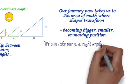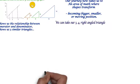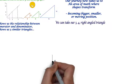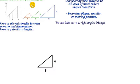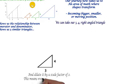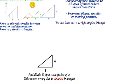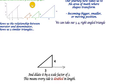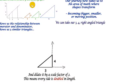So we can take our three, four, right-angled triangle, which we'll draw again here, and dilate it by a scale factor of two. This means that every side is doubled in length. We multiply each one by two.